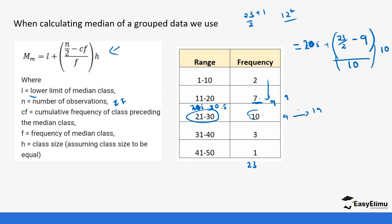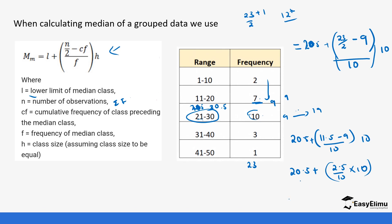Completing the formula: Median = 20.5 + [(23/2 − 9) / 10] × 10. So 23/2 = 11.5, then 11.5 − 9 = 2.5, giving 20.5 + (2.5/10) × 10 = 20.5 + 2.5 = 23. So 23 is our median for this example.